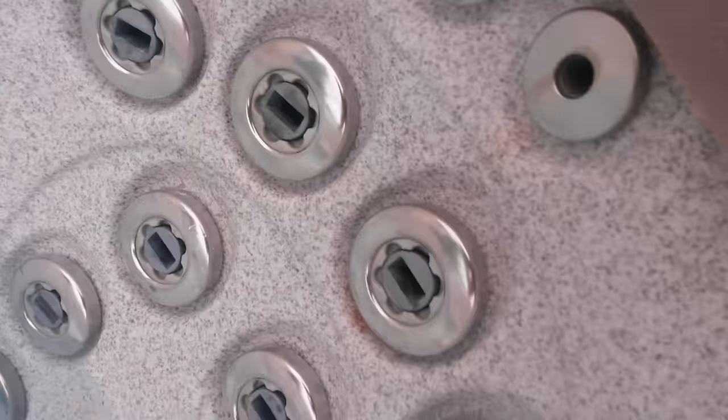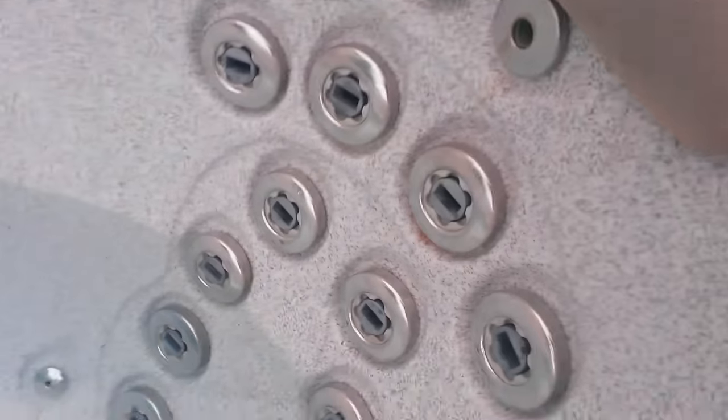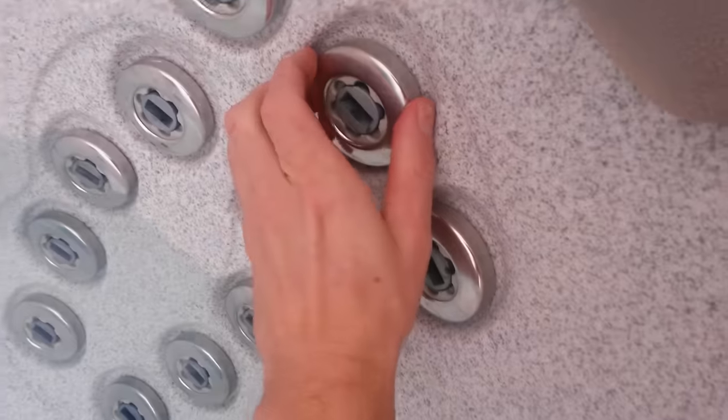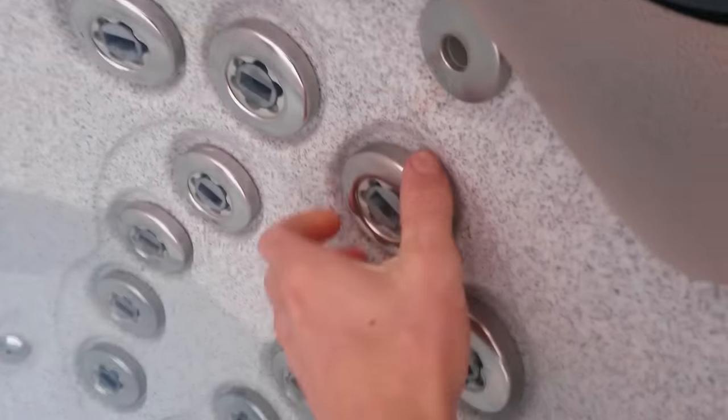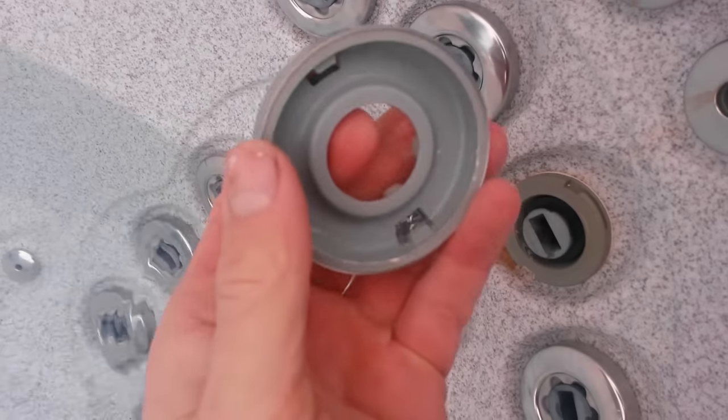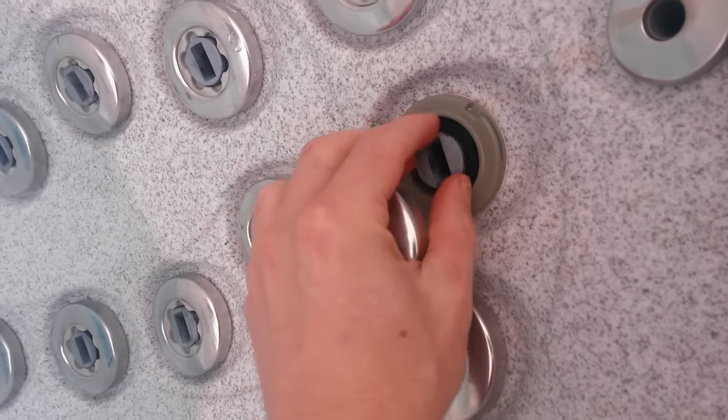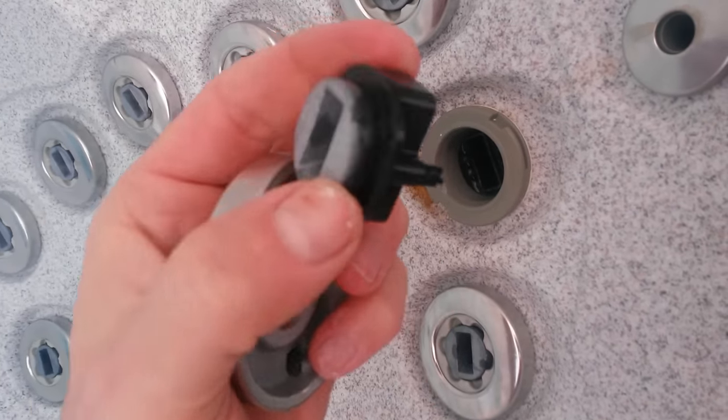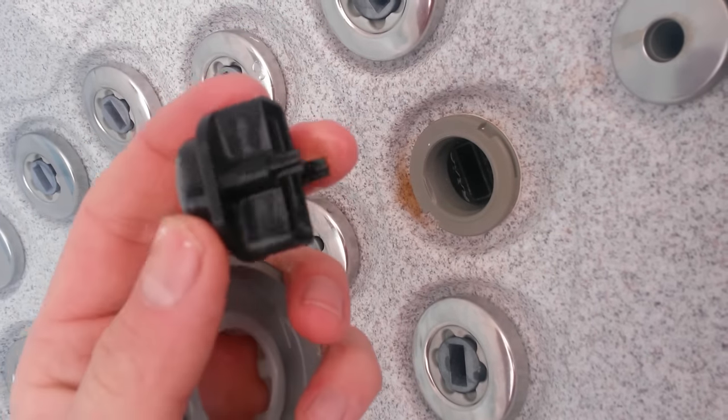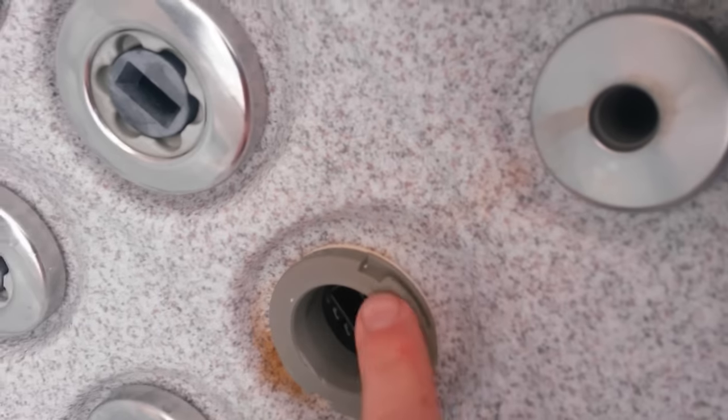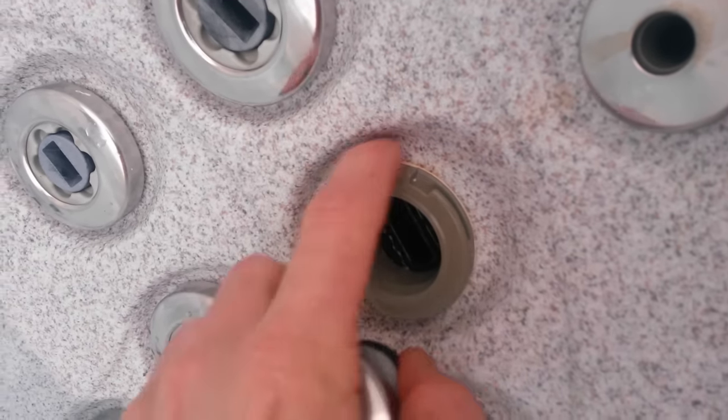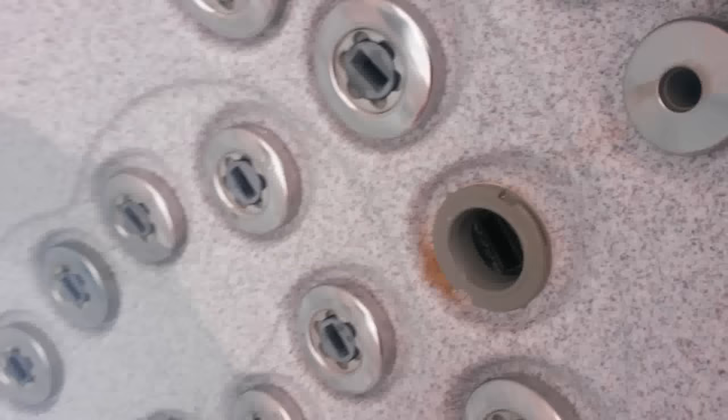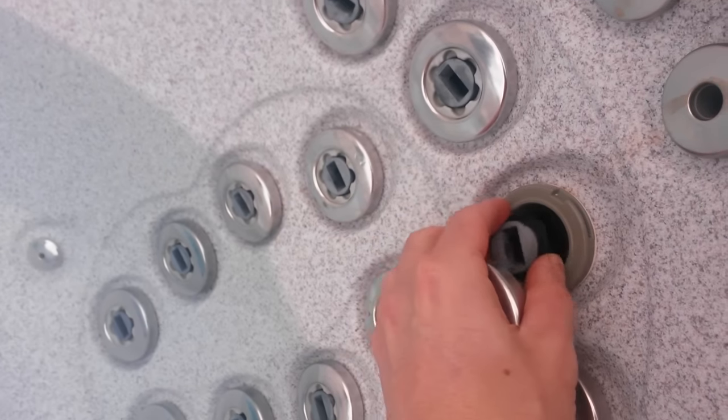These single directional jets here - you can't really do much with them, but you can remove the face. The face just comes off like that, and the little piece actually comes out, a little flow piece. You could probably soak that in vinegar, but it's not really going to get you anywhere. But it will give you access to this if you ever need to seal around it or anything. The face is removable.